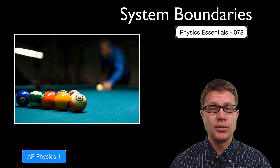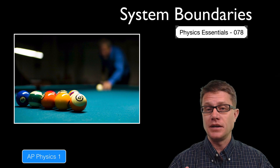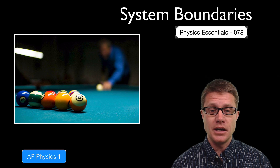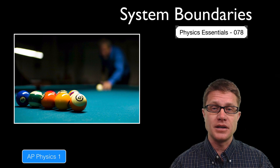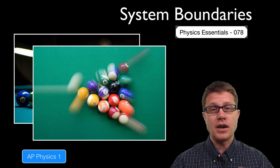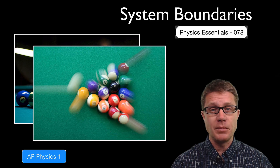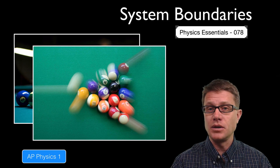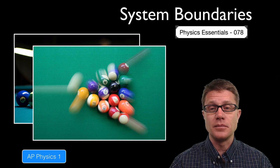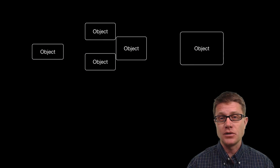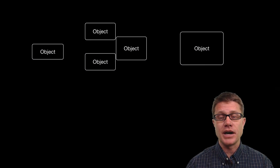We can think of this person playing pool as a system. You can see they are just about to break — they are going to hit the cue ball and it is going to slam into all the other balls. We can think of that whole thing as a system, and the amount of linear momentum is going to be conserved. That momentum within the system is going to stay the same.